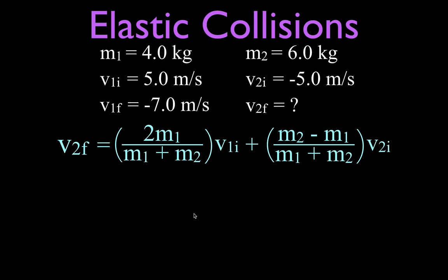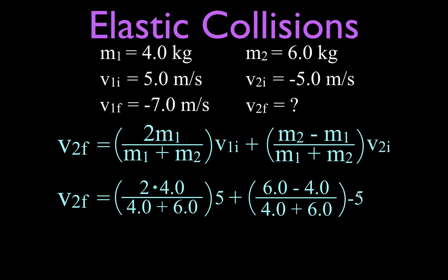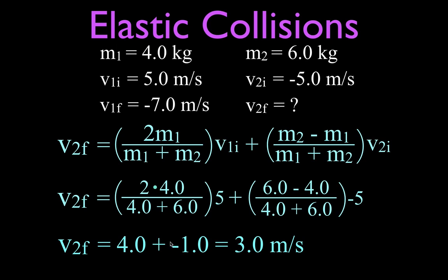Now for the final velocity of mass two, we have a similar equation. Plugging in our terms: 2 times 4 is 8, times 5 is 40, divided by 10 is 4. On the other side, remember this is negative, so we get a positive term and a negative term. 6 minus 4 is 2, times minus 5 is minus 10, divided by 10 is minus 1. So the result is 4 plus minus 1, which is 3 — mass number two, which was moving to the left, is now moving to the right with a speed of 3 meters per second.